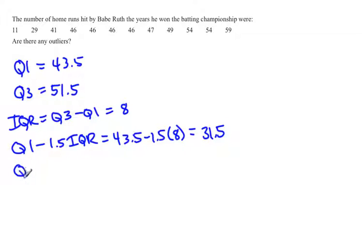The other definition of an outlier is anything bigger than Q3 plus 1.5 times the interquartile range, which in this case would be 51.5 plus 1.5 times 8. That equals 63.5. So an outlier is any number smaller than 31.5 or bigger than 63.5.